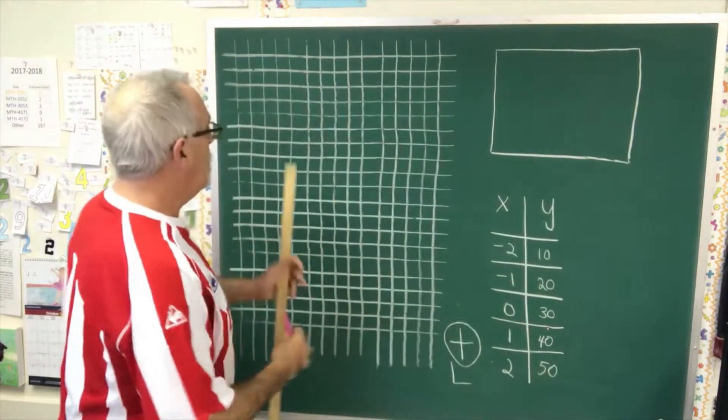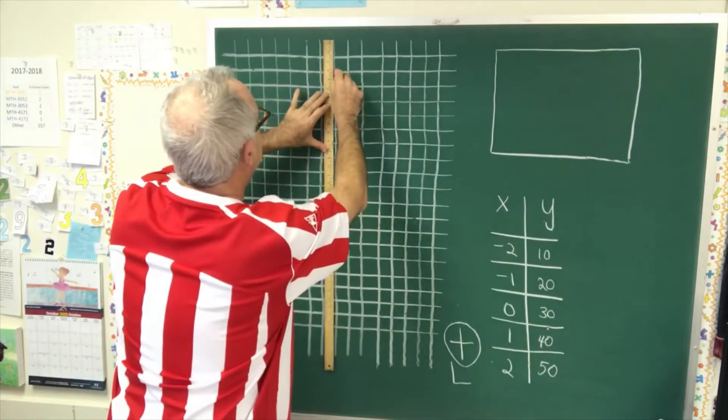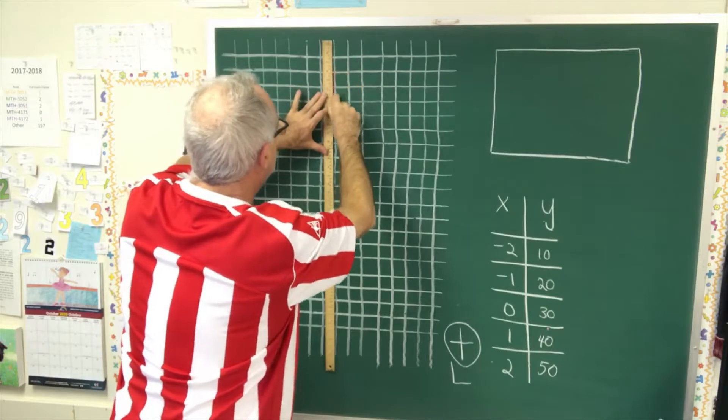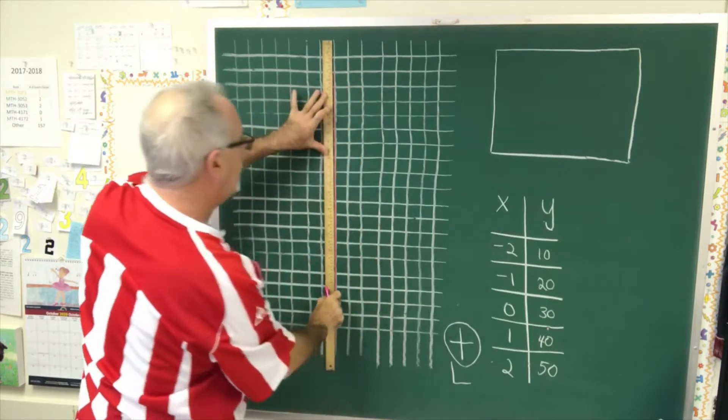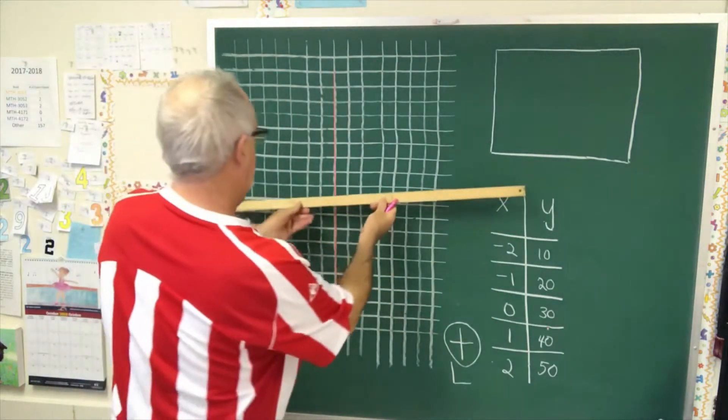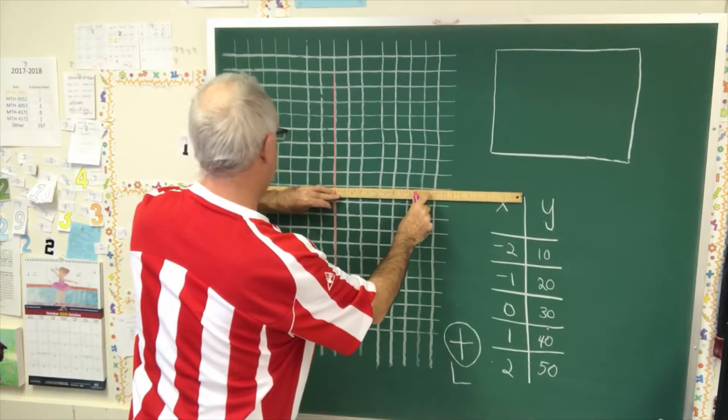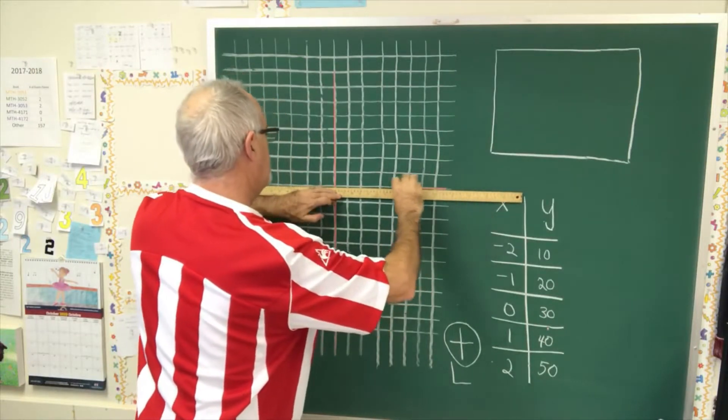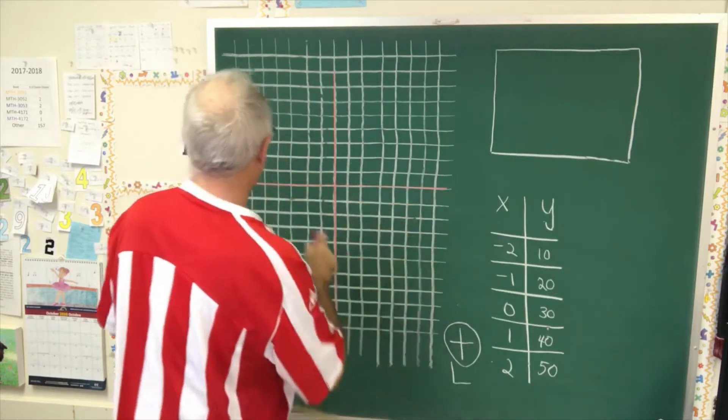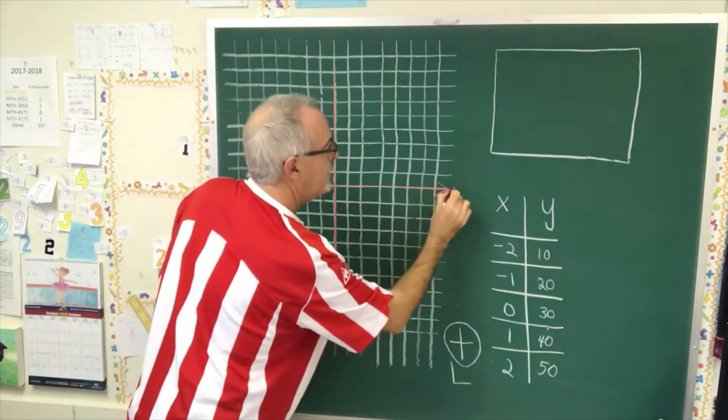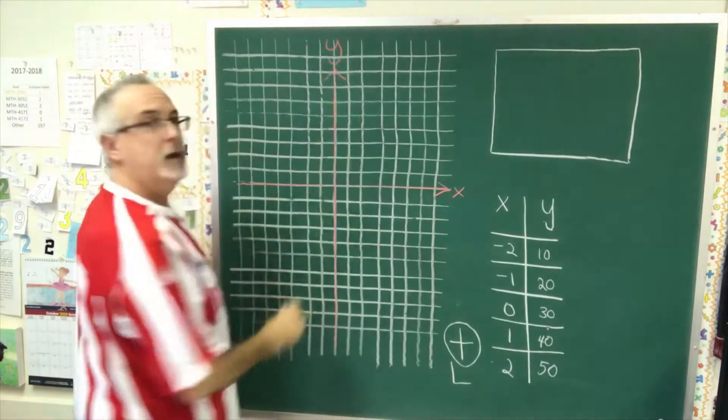I'm going to draw the x and y-axis first. So I'm using a different color so we can see it a little better, and I draw the lines on the graph paper. And I put an arrow here, label it as the x-axis. I put an arrow here and I label it as the y-axis.